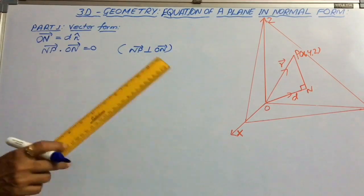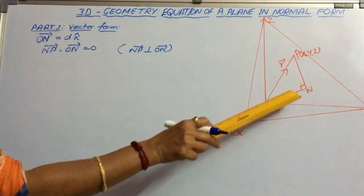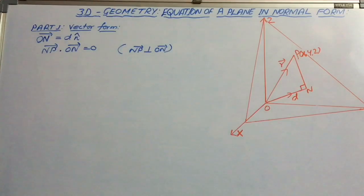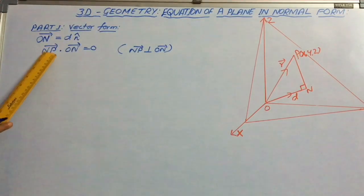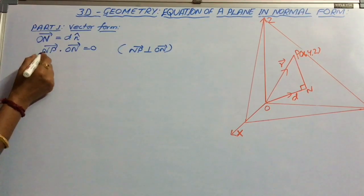Because we know that when two vectors are perpendicular to each other, their dot product is 0. Here NP perpendicular to ON, so dot product of NP and ON is 0.